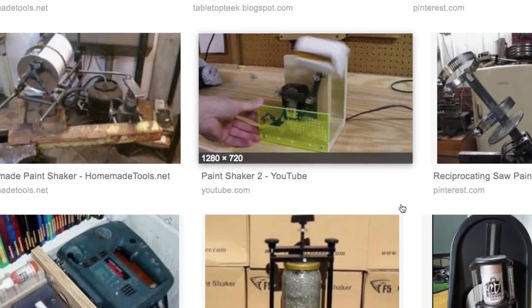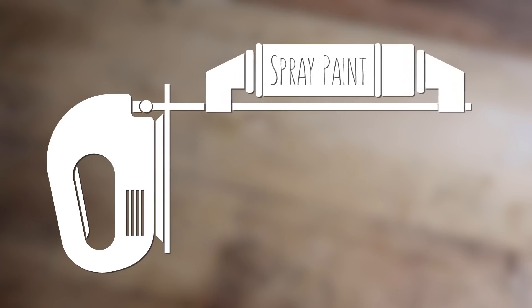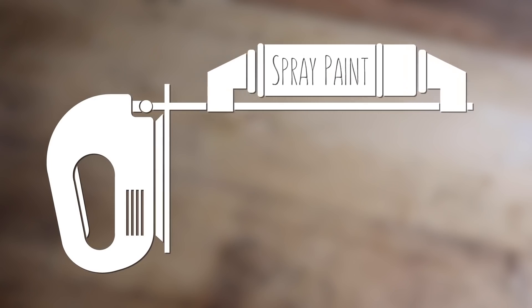Then, the internet being the internet, of course they had. One popular method is to simply attach a small clamp to a jigsaw, add a can of spray paint, and turn it on. So, I decided to give it a shot, because it looked easy and would only require a few minor adjustments for our garlic peeling purposes.